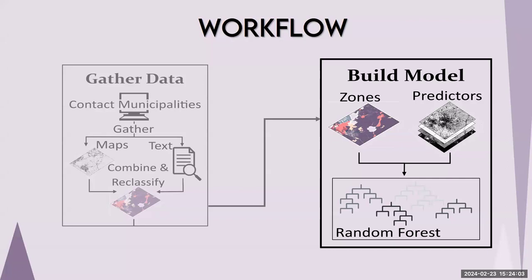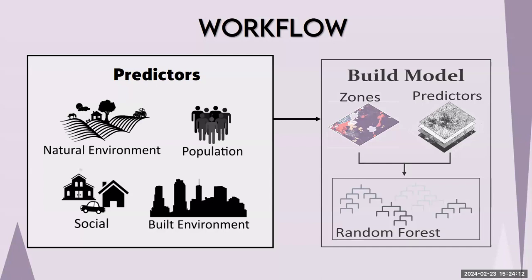We ended up with a suite of around 39 predictors grouped into four categories. The first group is natural environment, including historical land use measures or distances to agricultural lands. The second group is population, which can include population totals and density. The third group is social or society, which includes demographic indicators as well as distances to community centers like schools. The final group is built environment, which includes indicators such as distances to interstates or roads.